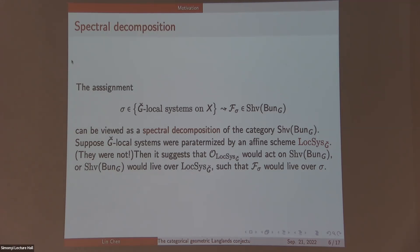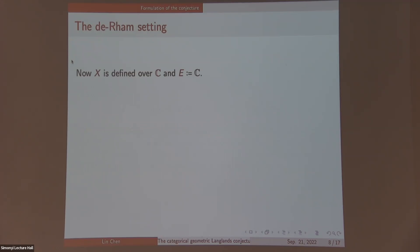In other words, live over Loc_SG-check such that this F-sigma lives over the point sigma. This is just like a standard story if you have a commutative algebra acting on an abelian category, you can do some spectral decomposition like this. If you are more ambitious, you might want to compare the category of sheaves on Bun_G with quasi-coherent sheaves on Loc_SG-check. But in fact, you can do it in that setting, but it's easier to do it in other settings. Historically, people first compare these categories in the de-Rham setting instead of the previous setting.